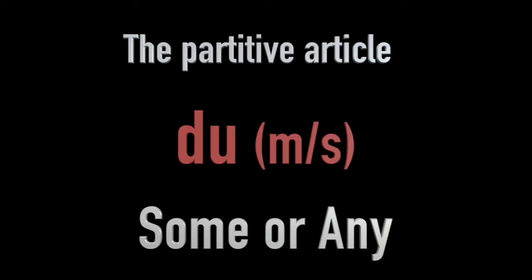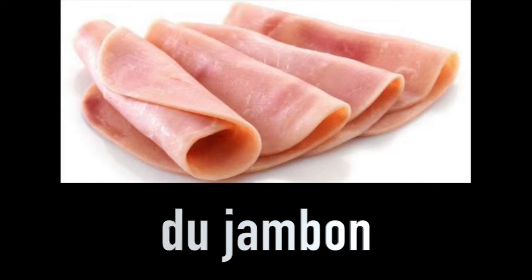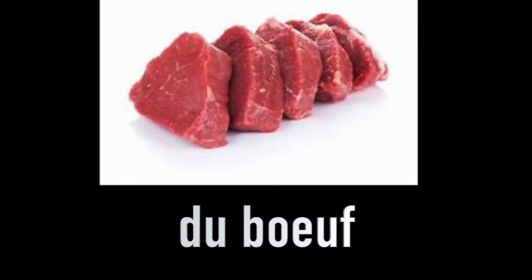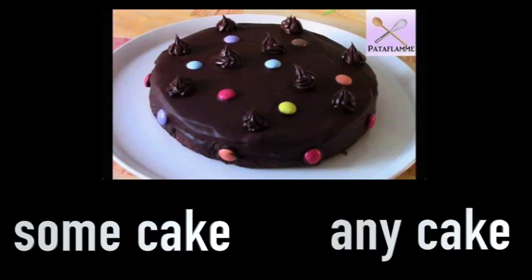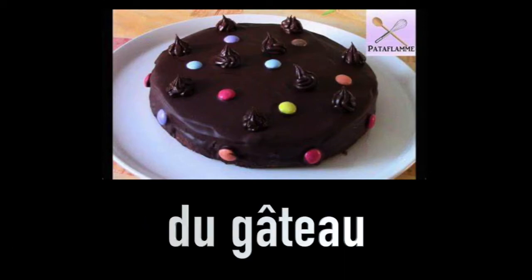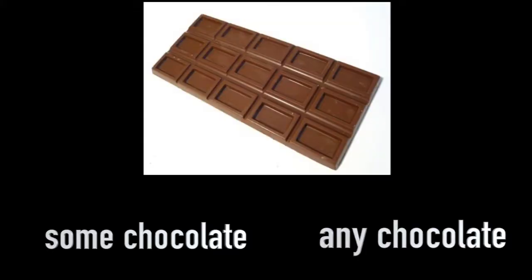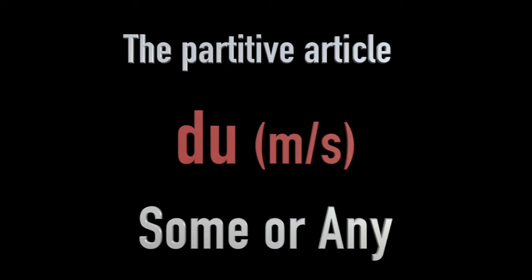Let's start with some examples of masculine nouns using 'some' or 'any'. Some ham or any ham would be du jambon. Some or any beef — du boeuf. Some or any cheese — du fromage. Some or any cake — du gâteau. Some or any honey — du miel. Some or any chocolate — du chocolat. All of those nouns are masculine, so in front of a masculine noun, if you want to say some or any of it, we say du.